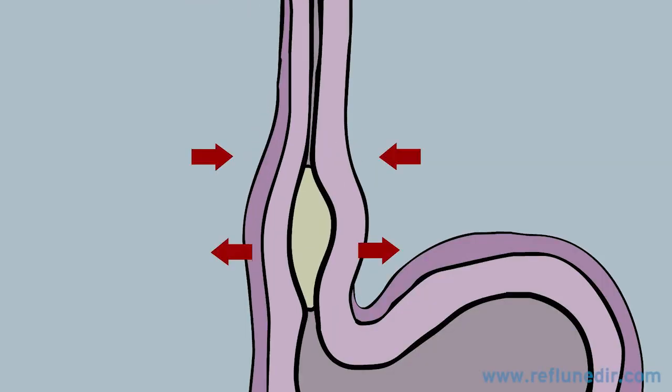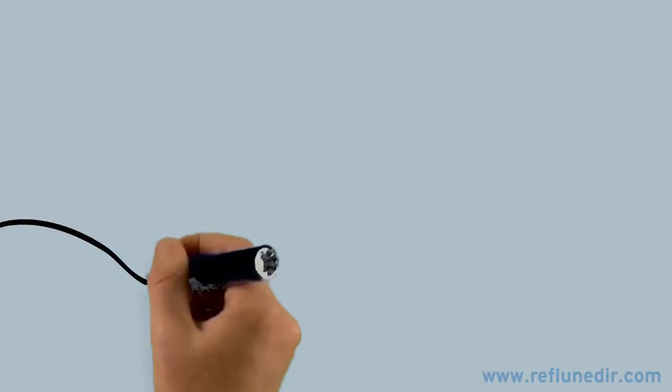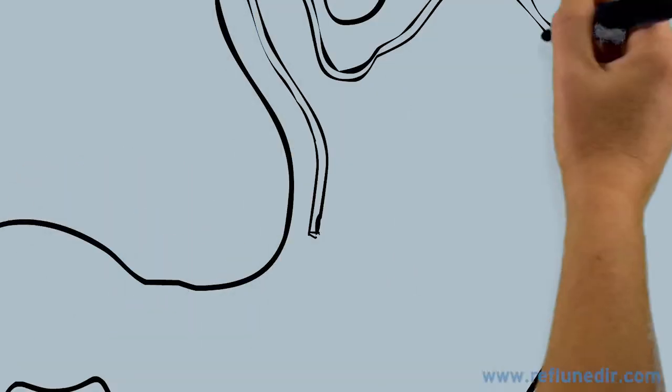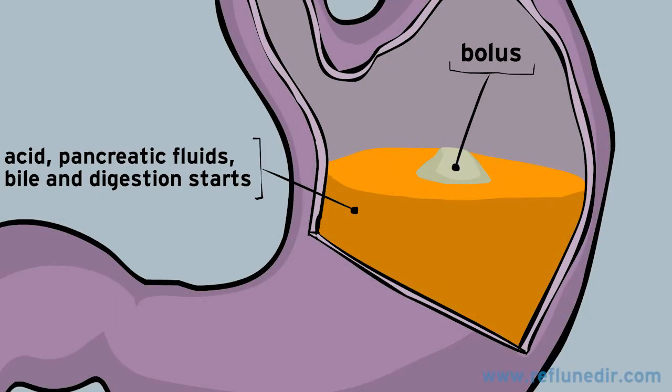The food bolus travels down the esophagus in a wave motion known as the peristaltic movement and enters the stomach. Here, the food bolus is mixed with acid, pancreatic fluids and bile and digestion starts.